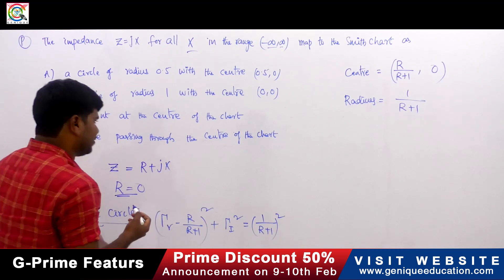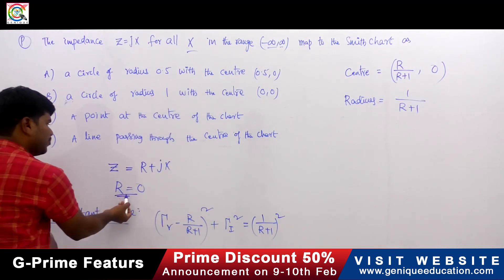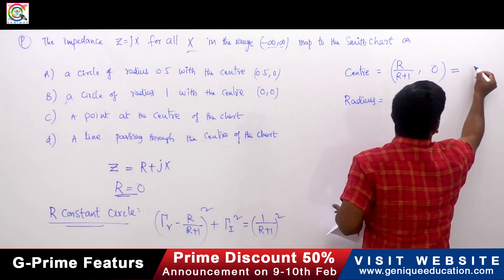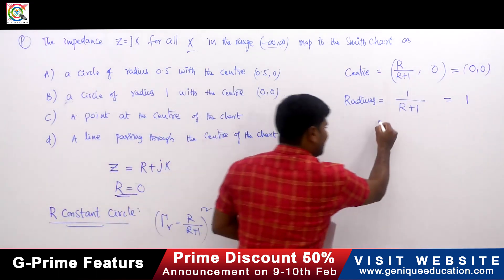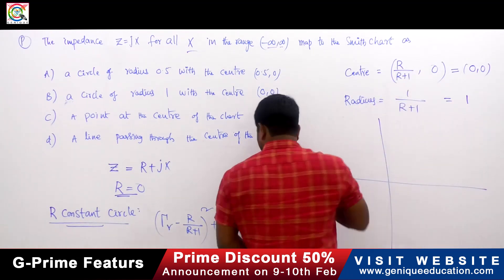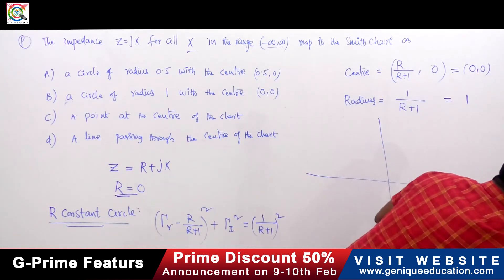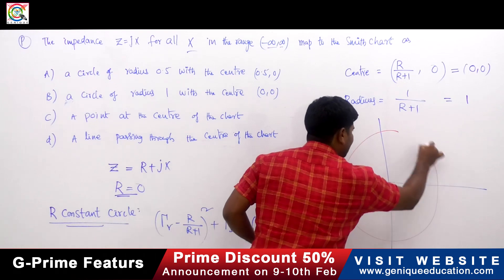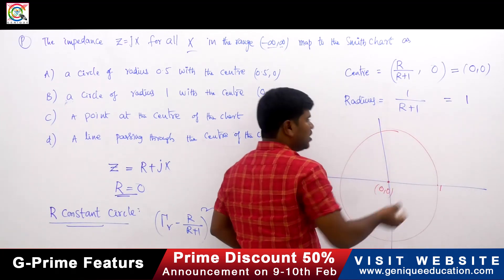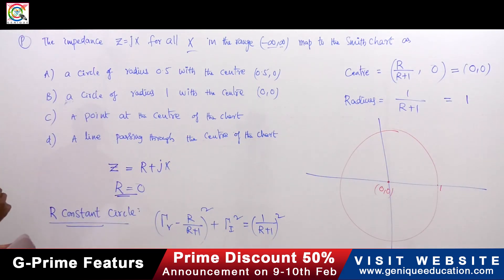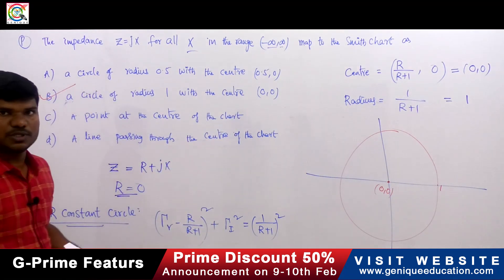Now, substituting R equals 0: the center becomes 0 comma 0, and the radius becomes 1. So we get a circle with center (0, 0) and radius 1. Therefore, the answer is a circle of radius 1 with center (0, 0) — option B is the correct answer.